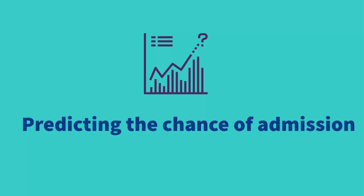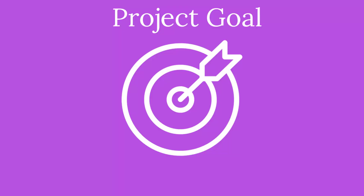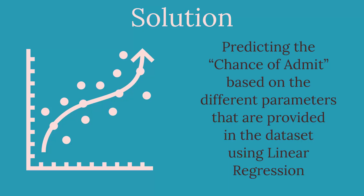Welcome to the lesson on solving the problem of predicting the chance of admission. Our goal here is to predict the chance of admit based on the different parameters provided in the data set. We will solve this machine learning problem by using the linear regression model.